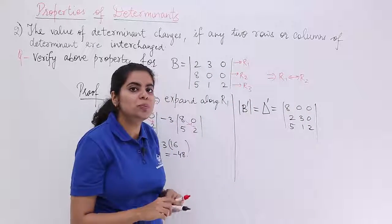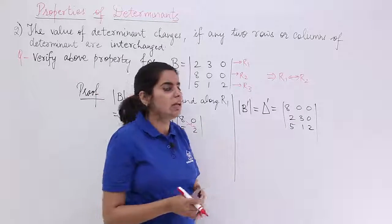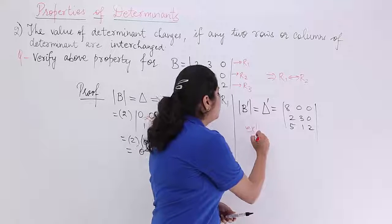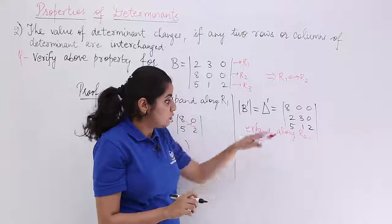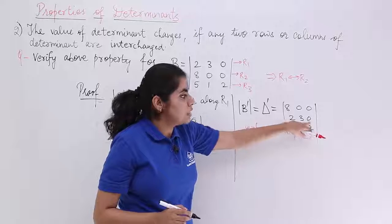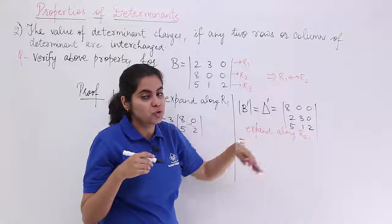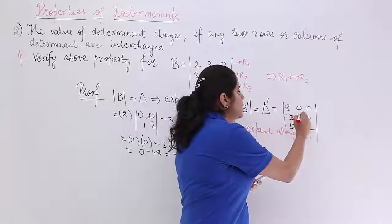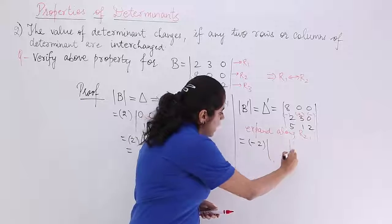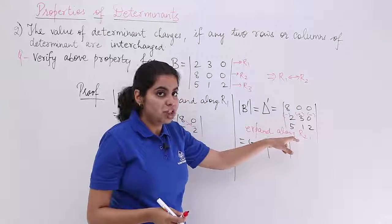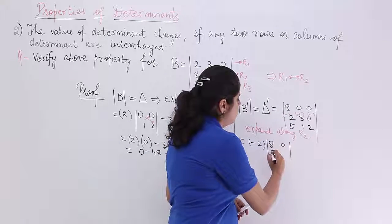We need to expand and evaluate this new determinant. Let's expand along row 2. The row 2 elements are 2, 3, 0. The element 2 is in the second row, first column, so its position gives 2+1 = 3 which is odd — making its sign minus. So the sign pattern is minus, plus, minus. We write minus 2 and eliminate the first column and second row, giving sub-determinant 8, 0, 5, 2.